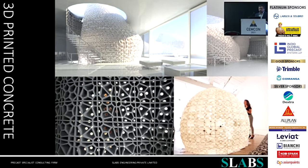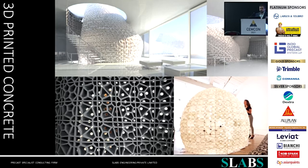3D printed concrete structures require BIM process or robotic integration with design so that robotic printers can print complex geometries — molds for such applications are not possible. Currently this technology is limited to printing only one material at a time, and in most countries only load-bearing structures have been built as prototypes.